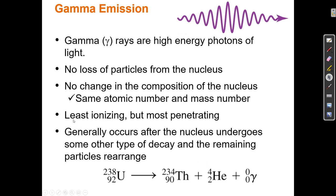Gamma is the most penetrating — gamma particles can pass through four, five, even six inches of lead. You need about a foot of lead to stop them. However, they are the least ionizing, because in order to ionize a neutral particle you need to interact with charged particles like protons, and since gamma rays have no charge, they're less likely to interact with protons and neutrons. So gamma radiation passes right through matter but is the least likely to actually cause ionization while doing so.